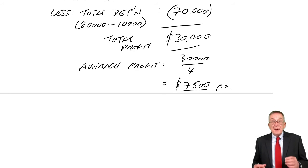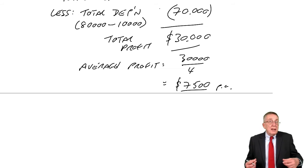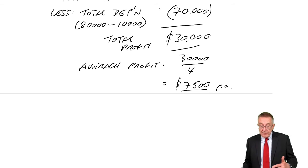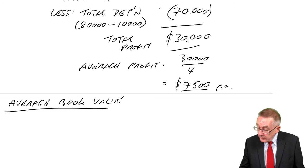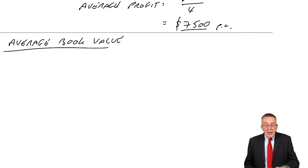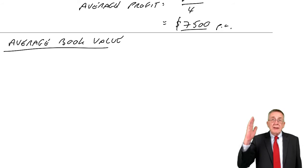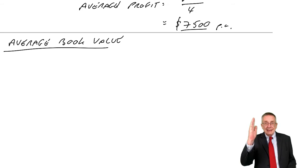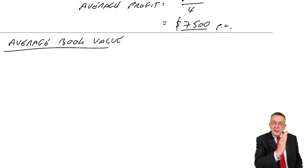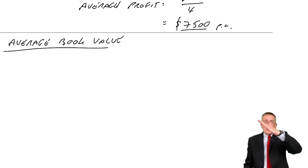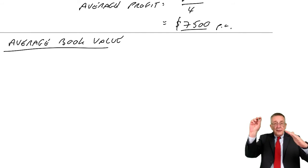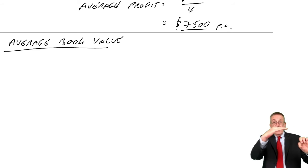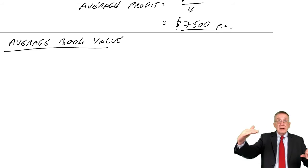We want to express that as a percentage of the average book value — the carrying value in the statement of financial position. Now, be careful here, people do funny things. When we buy the machine it costs 80,000, so it sits in the statement of financial position at 80,000. Each year we depreciate, so each year the value falls. If there was no scrap value, it would start at 80 and fall down to zero — the average would be halfway, which is 40,000.